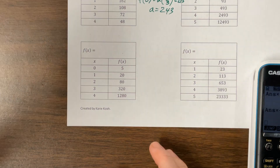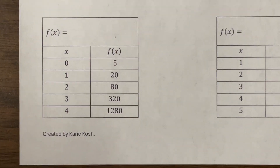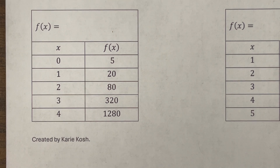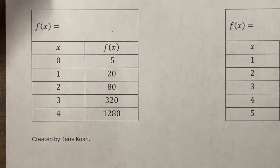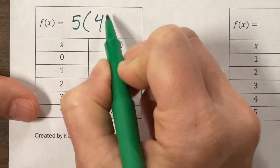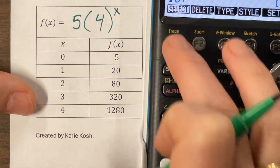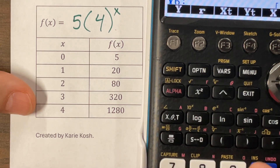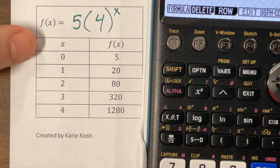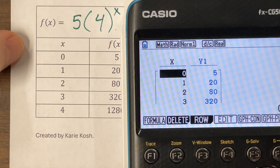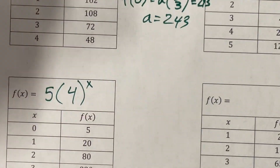The one underneath behaves in a similar way. Pause this right here and go try that one on your own. The answer is 5 times 4 to the x. Let's verify — with the table set the same way: 5, 20, 80, 320. Yeah, so 5 times 4 to the x is correct.